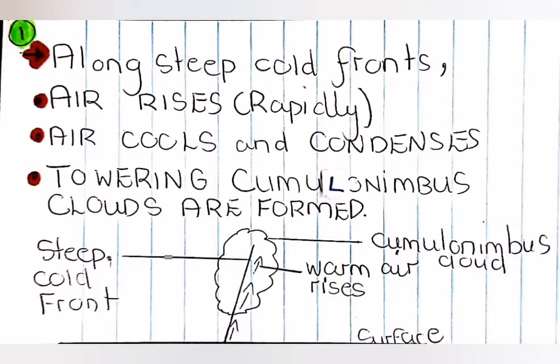Along the steep and cold fronts, warm air is forced to rise. As it rises, it cools adiabatically until eventually it reaches condensation level. The moisture within the air condenses, and this is where you've got the beginning of the formation of your cumulonimbus clouds.